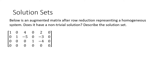Here's an example. Let's say we have a system of linear equations, we row reduce, and we end up with this augmented matrix. Here is an augmented matrix after row reduction, and this is representing a homogeneous solution. The homogeneous solution means the augmented column equals zero — our last column is all zeros. We've row reduced and gotten this. Let's describe this solution set.